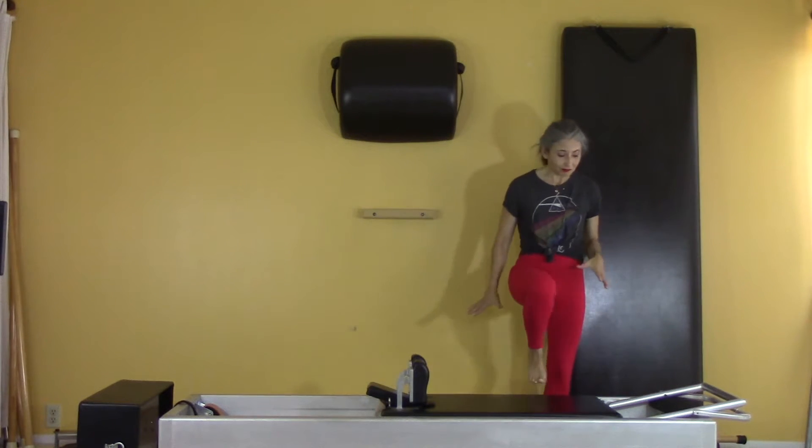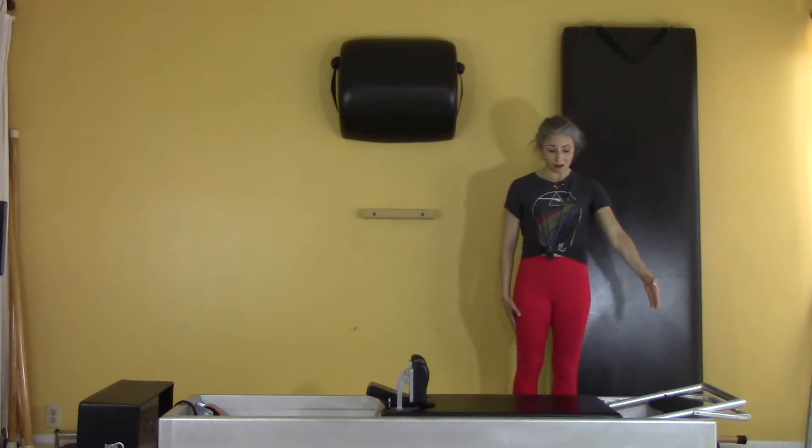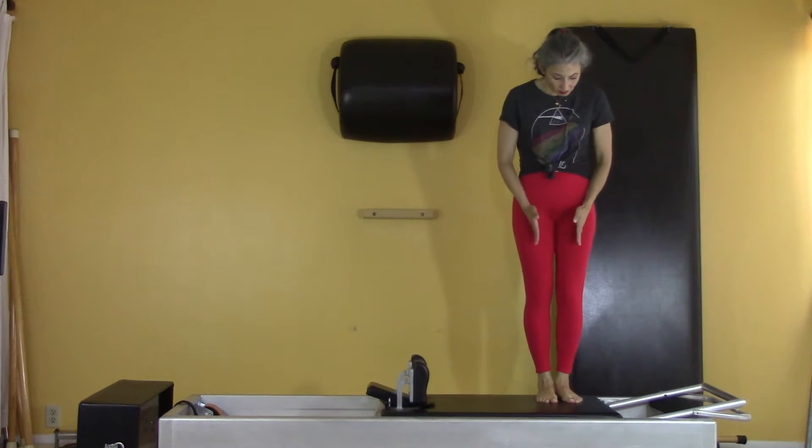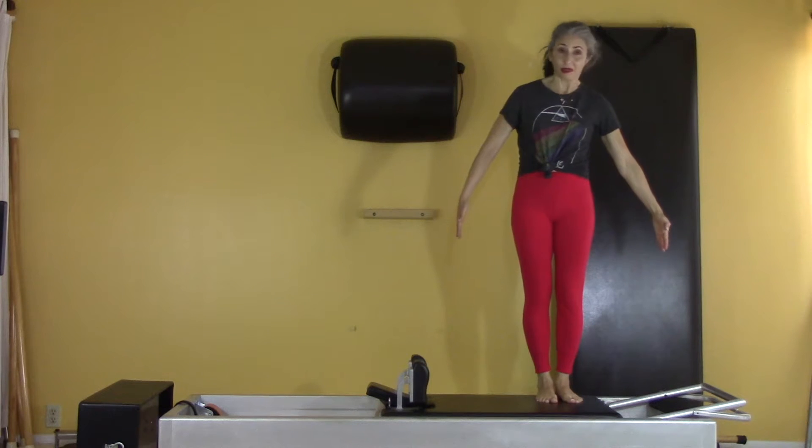Okay, so here I am on my classical reformer. I've got a pad for my foot that's going to end up on the frame, and I'm going to step one foot at a time onto the carriage. I'll step one foot up and then the other, and now I'm going to place my feet kind of right in the center of where one is going to go on the frame and one is going to go ultimately to the shoulder rest.